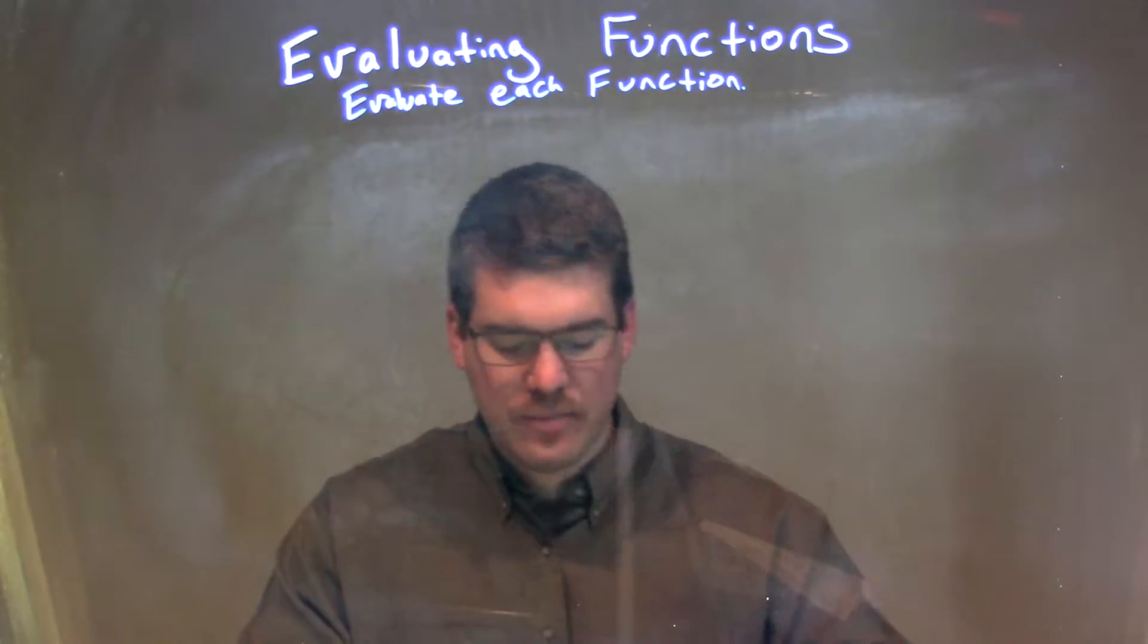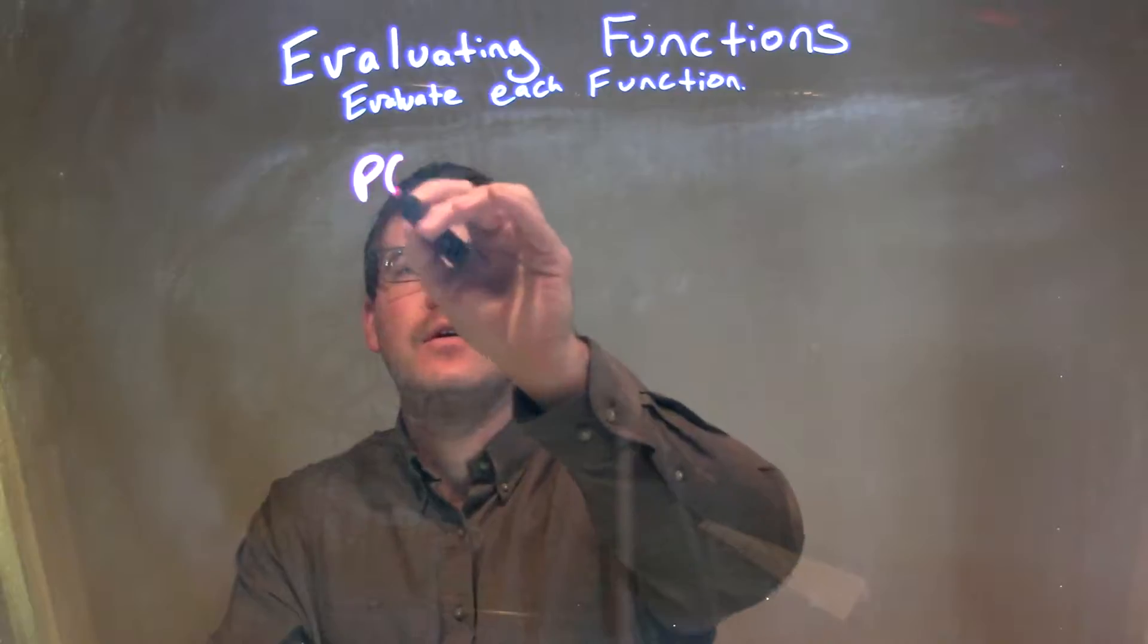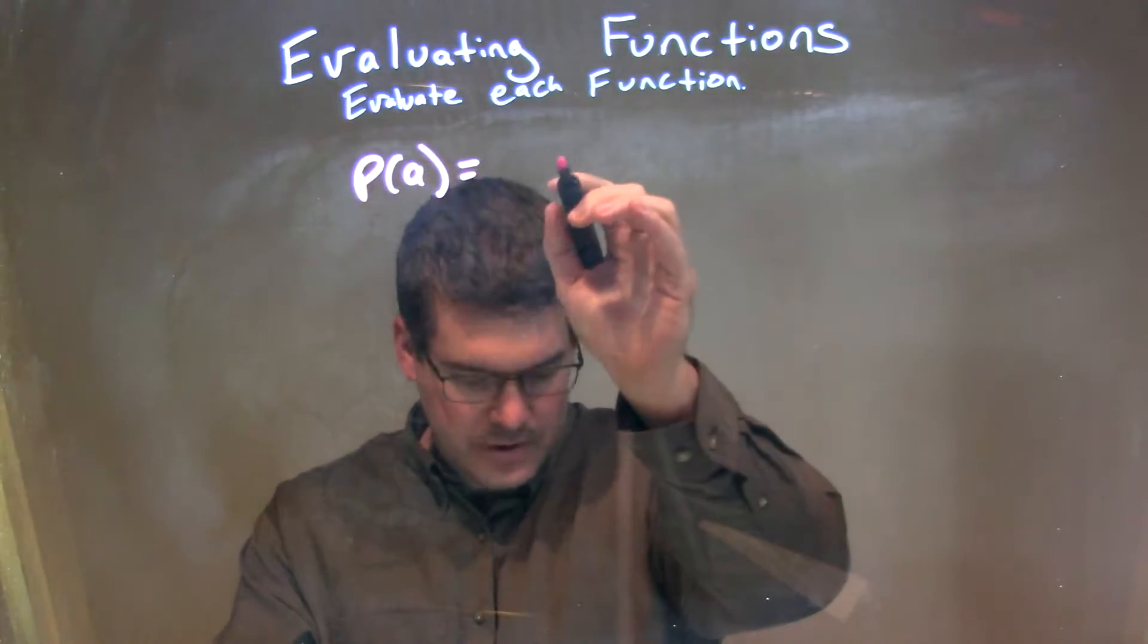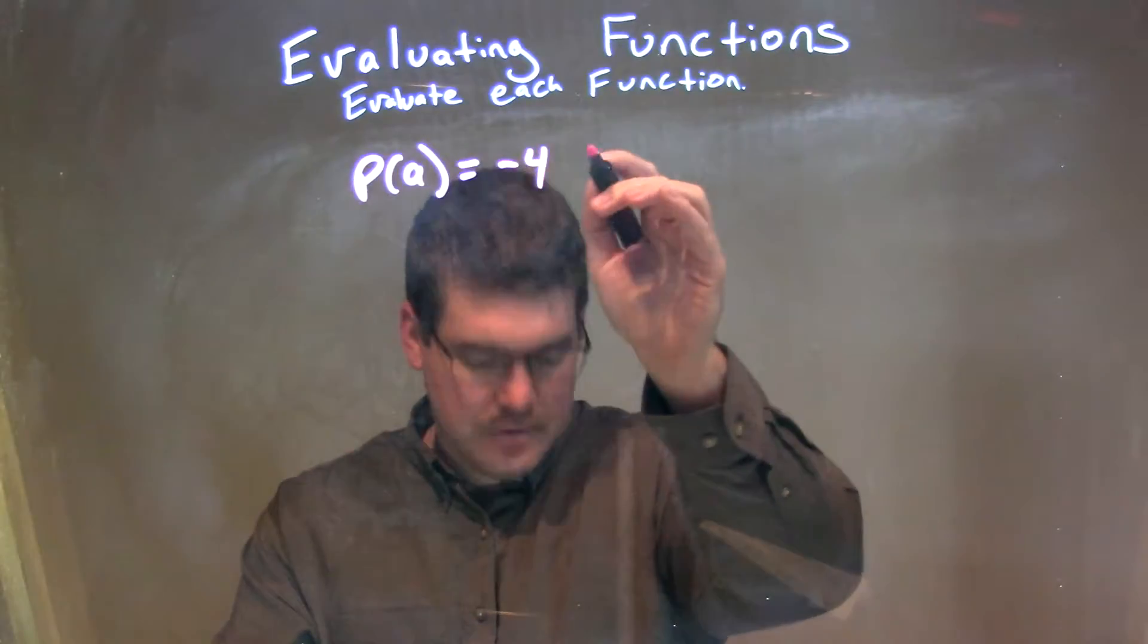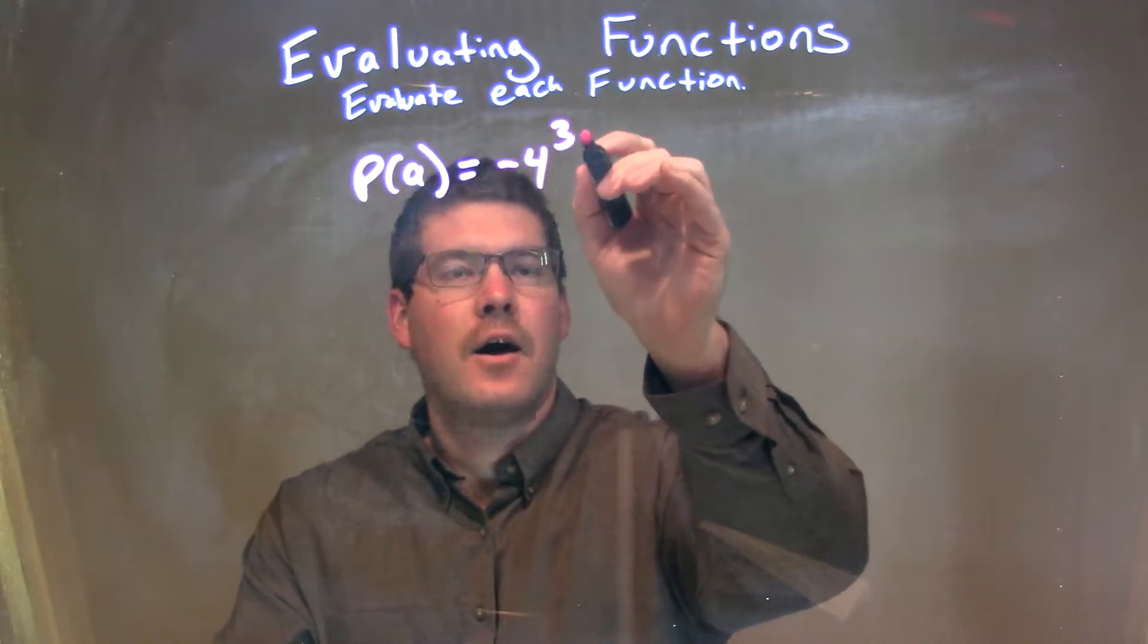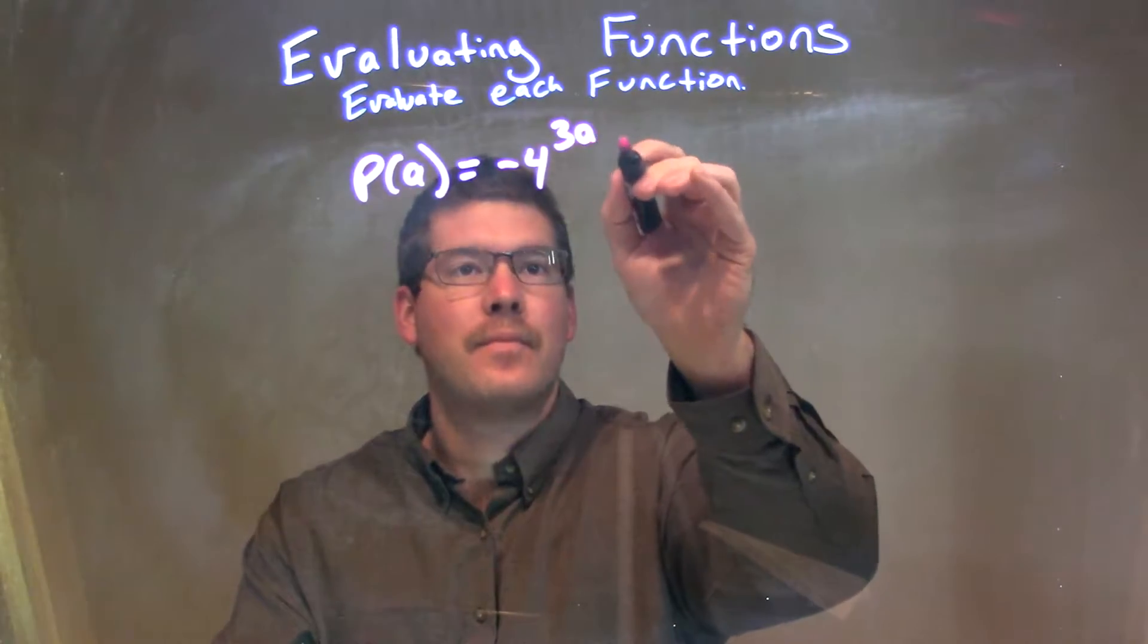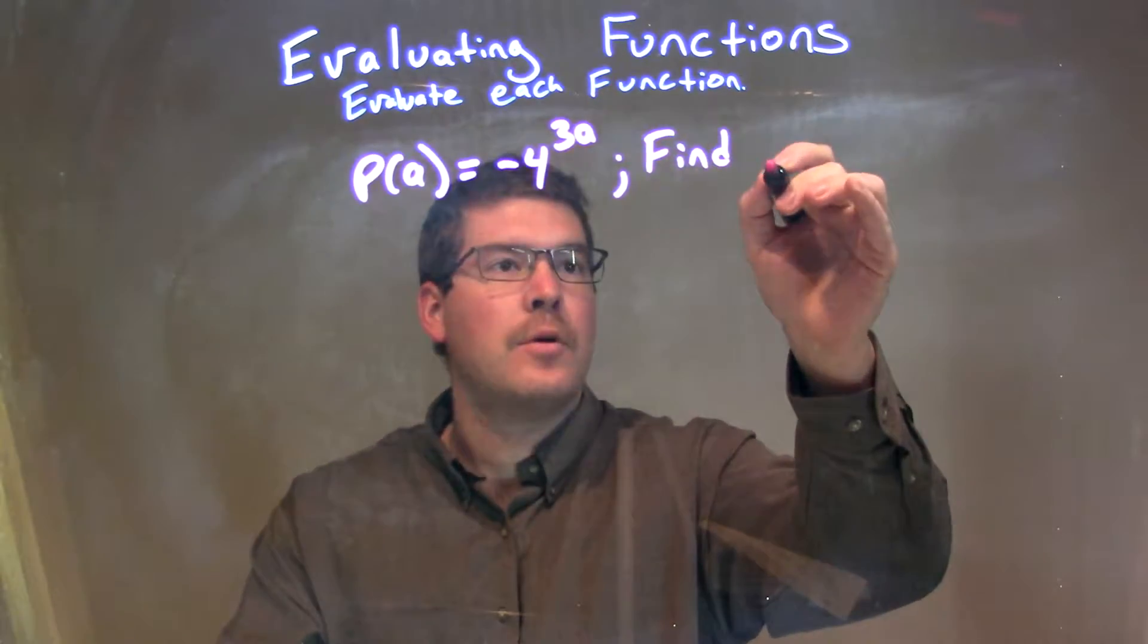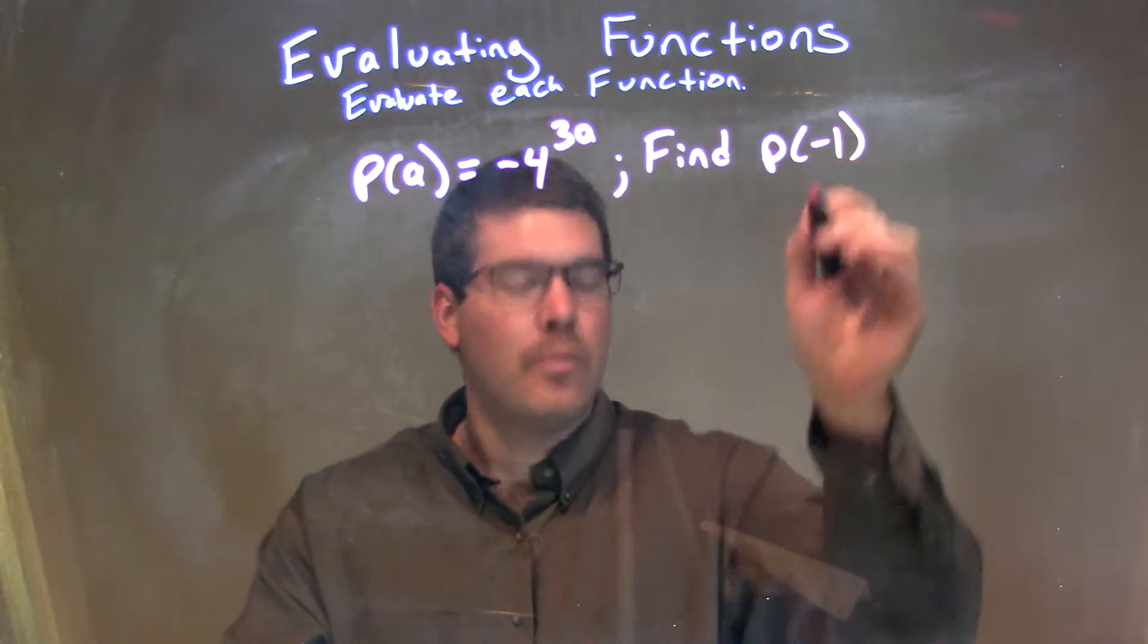If I was given this function, P of A is equal to negative 4 to the 3A power, and we're going to find P of negative 1.